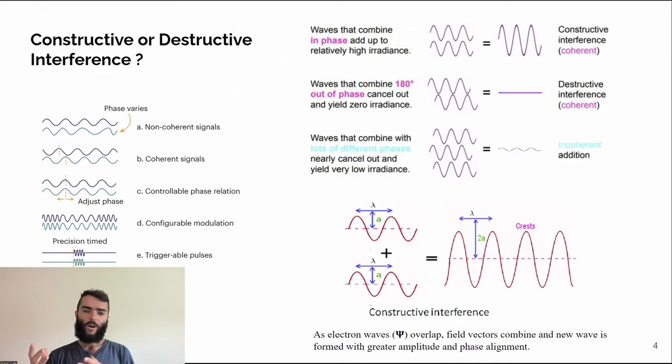The question becomes constructive or destructive interference, or coherence, whereby there are non-coherent signals and coherent signals. It's really whether it's a gradient in function of how waves and their wavelength and amplitude overlap together.